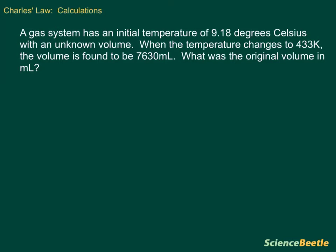We have a system that has an initial temperature of 9.18 degrees Celsius with an unknown volume, and when the temperature changes to 433 Kelvin, the volume is found to be 7,630 milliliters. The problem is asking us, what is the original volume in milliliters? So let's identify all the parts. We know that the initial temperature is 9.18 degrees Celsius. We do have an unknown volume at the very beginning, so that's our V1.